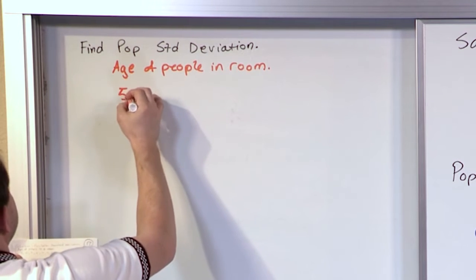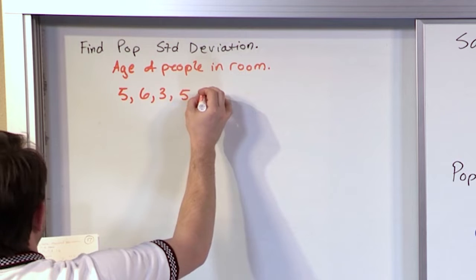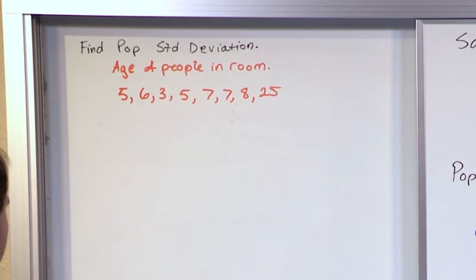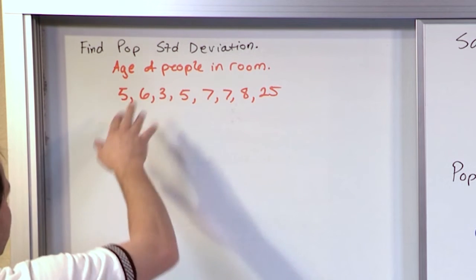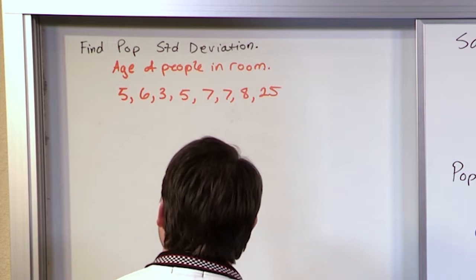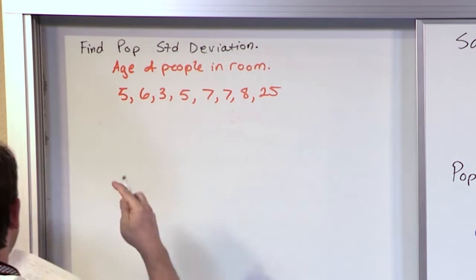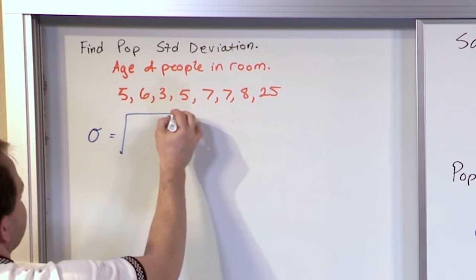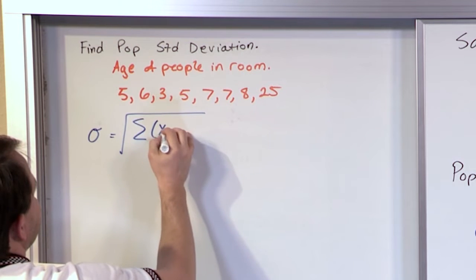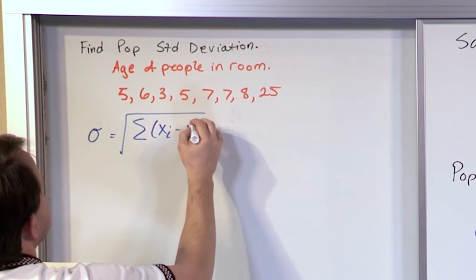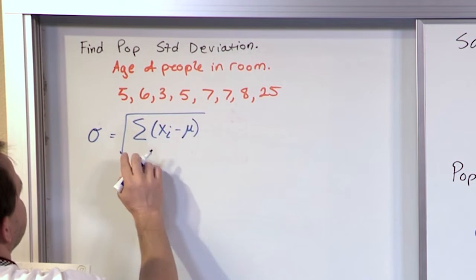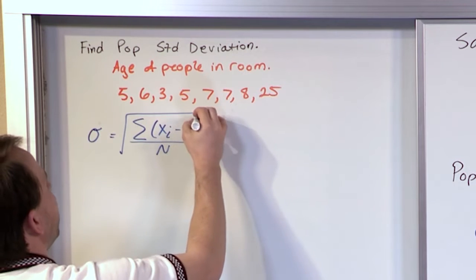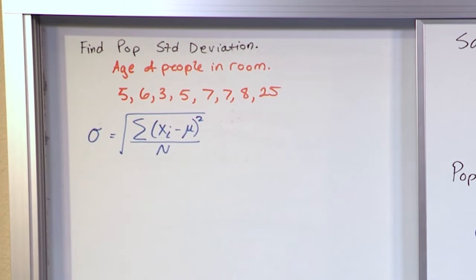So the data would be 5, 6, 3, 5, 7, 7, 8, and 25. This is everybody in the room — that's the entire population of everybody we care about. The standard deviation is the square root of the sum of each individual data point minus the population mean, squared, divided by n, which is the number of people in the population. We have a square because we have to square each difference, as always.